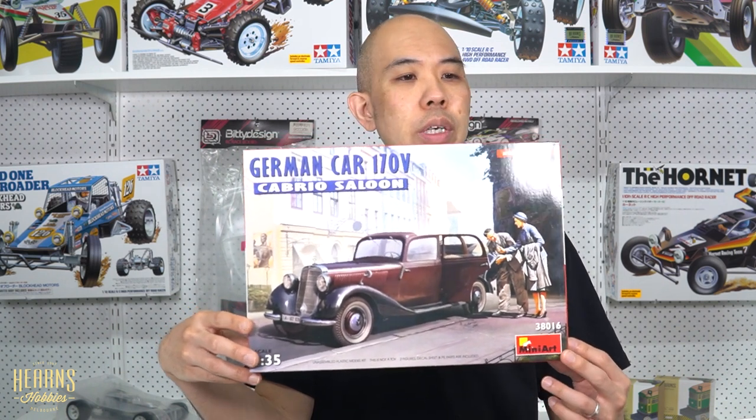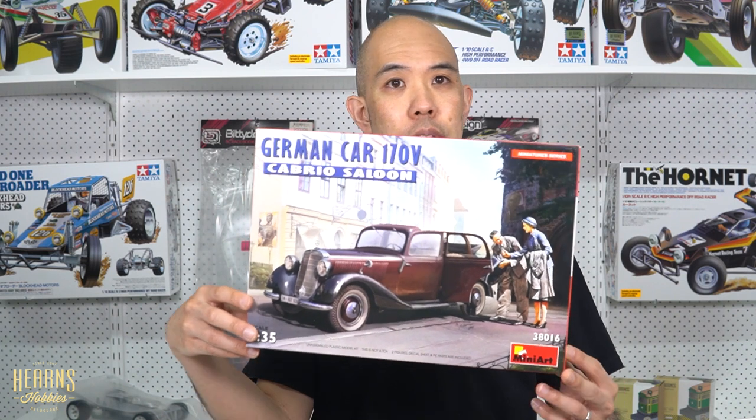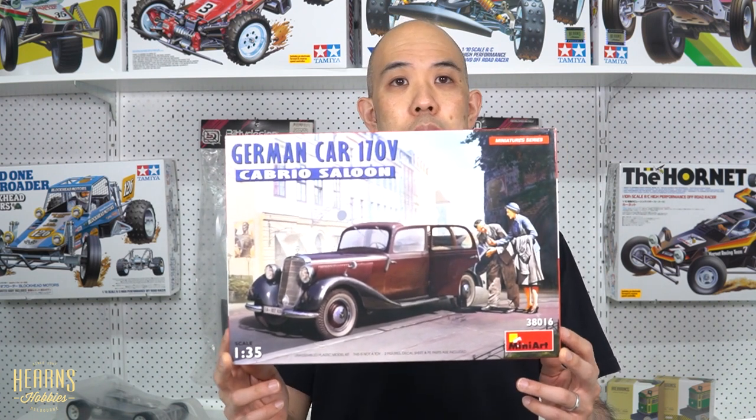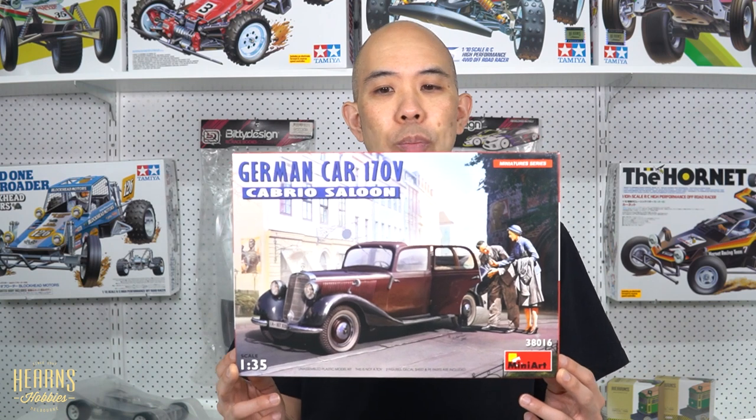So there you go. Thank you for watching me do the unboxing of this particular MiniArt kit. This is a 35th scale German car, 170V, a Mercedes-Benz Cabriolet. This is in civilian trim. There are military ones as well, but I thought this was really nice. It has a nice figure set to go with it as well. So quite a beautiful kit, an advanced kit for advanced builders. Thank you for watching.